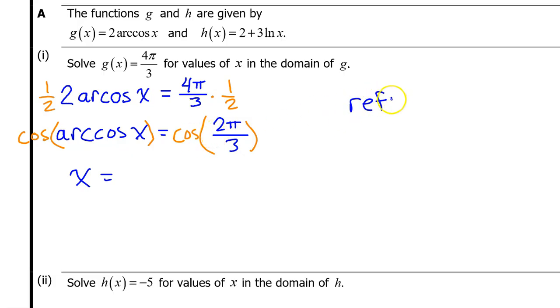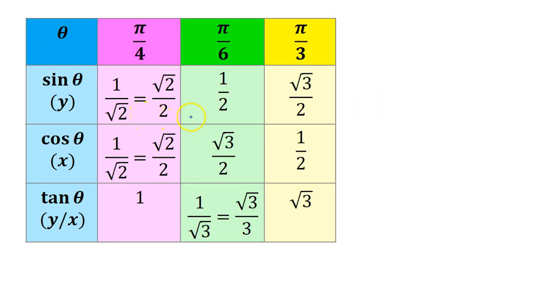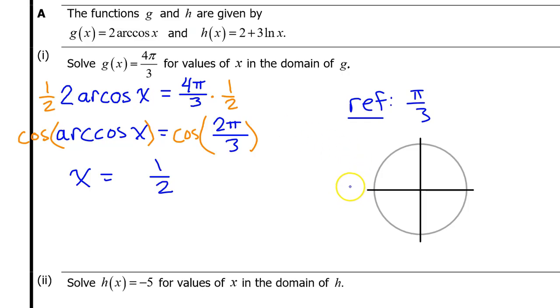The reference angle is obviously π over 3. The cosine of 2π over 3 will be the same as the cosine of π over 3, which is one-half, except it might be negative depending on the quadrant. By the way, I'm assuming that you've long ago memorized these nine trig values. If you have not, pause the video and memorize the chart right now. On the left side of the unit circle, we have π, which we can think of as 3π over 3, so 2π over 3 will be right here in the second quadrant. In the second quadrant, x values, and thus the cosine function, are negative. So x is equal to negative one-half. That's it for A part 1.